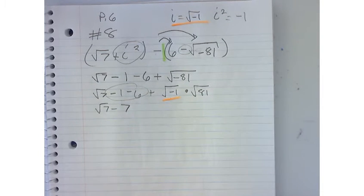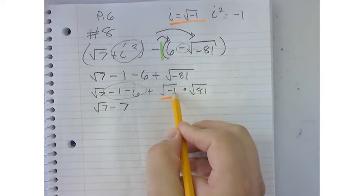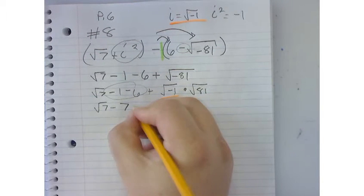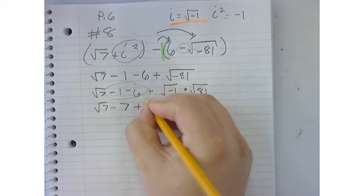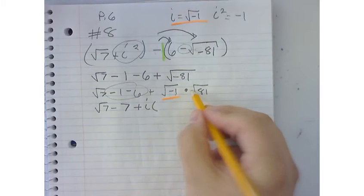So I'm going to knock that out of the way. What is this the same as? So it's positive i times, now what's the square root of 81?